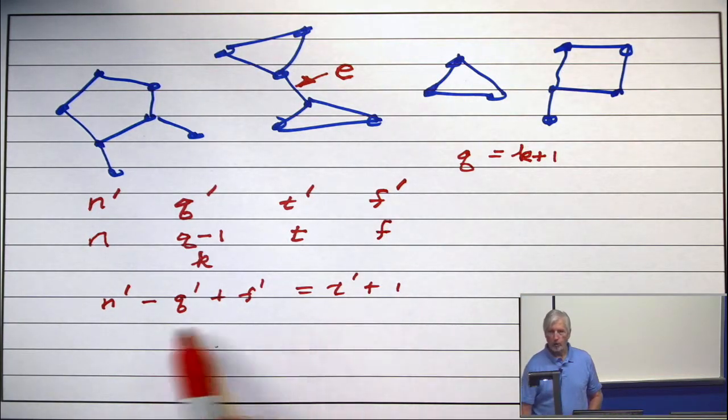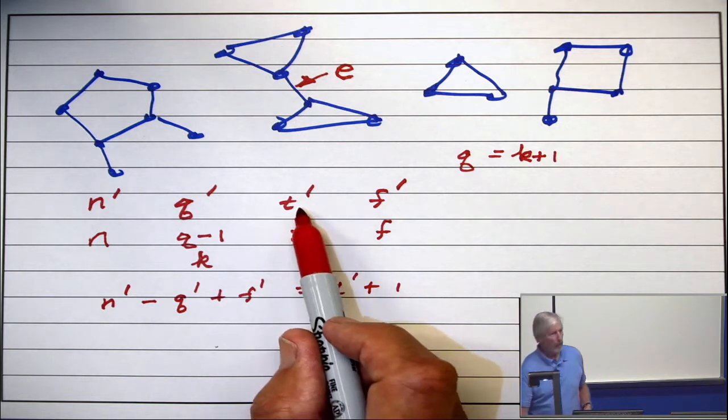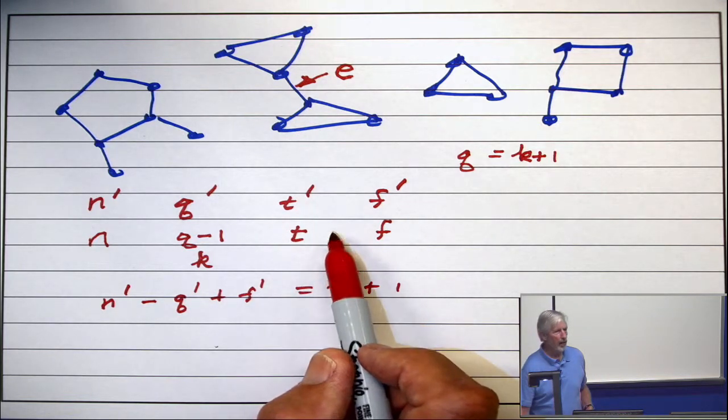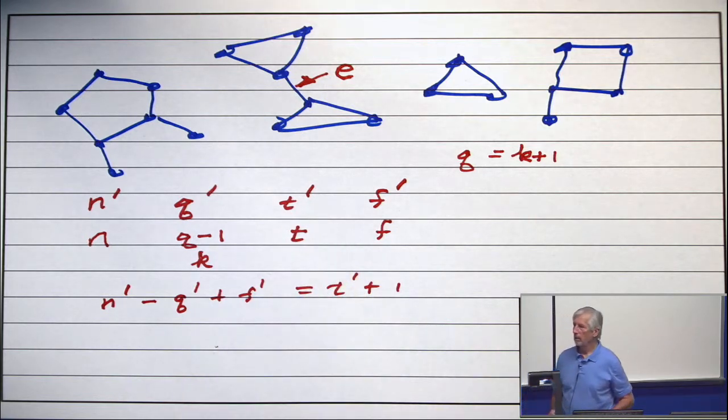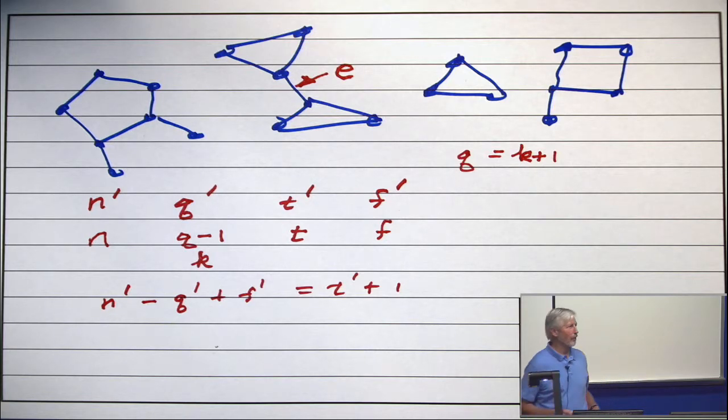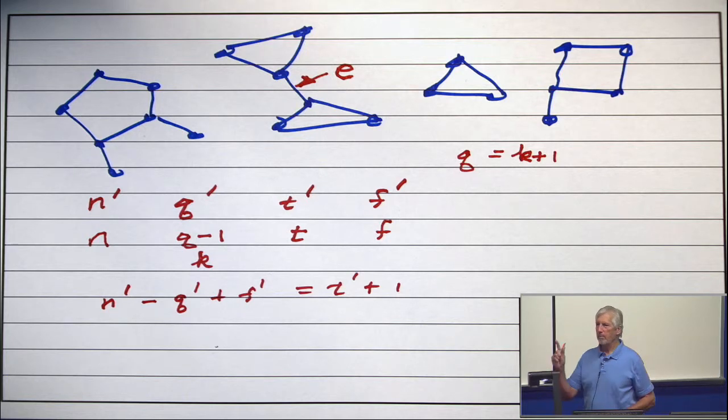All right, so now we know this formula works. But t prime and t, is that correct? Is t prime the same as t? What is the definition of a bridge? A bridge is an edge so that when you remove it, the number of components goes up by one.